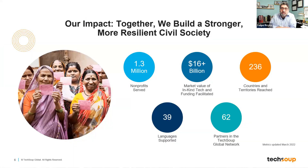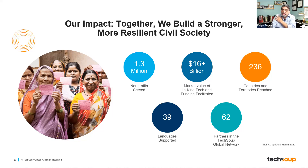Our impact: we've been around for a while and we serve about 1.3 million nonprofits around the world. We've delivered about $16 billion in market value of in-kind tech. The market value is the retail price — a software package might retail for $200, and you might get it as a donation or for like $20. We reach about 236 countries, support 39 languages, and have 62 partners around the world. We have 200 employees here at TechSoup, but we have a pretty big impact for an organization that's not that large.